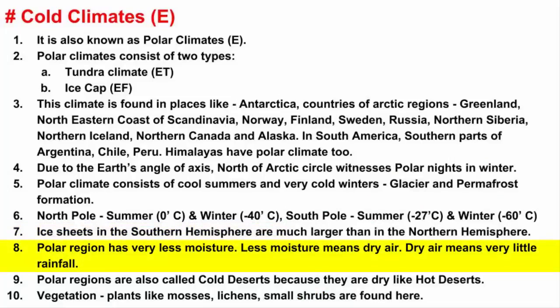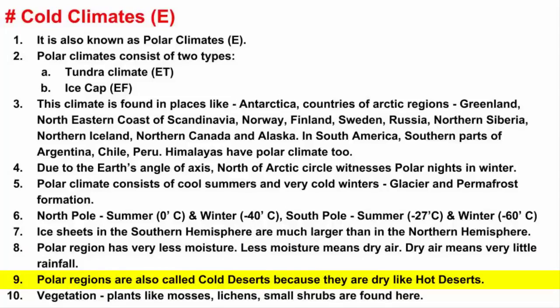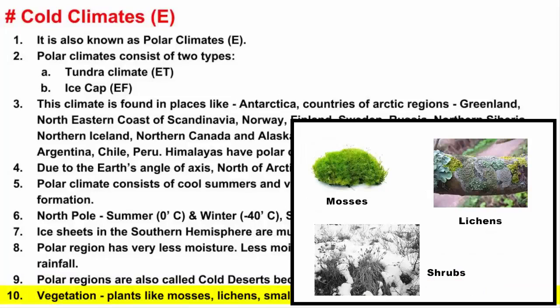Since the air in polar regions is so cold, it contains very little moisture. Half the year, the sun does not rise above the horizon, making the air dry. Dry air means very little snowfall, so polar climates can be as dry as hot deserts — that's why these regions are also called cold deserts. The only plants that can survive the harsh winters and wet summers are small ground-hugging plants like mosses, lichens, and small shrubs.